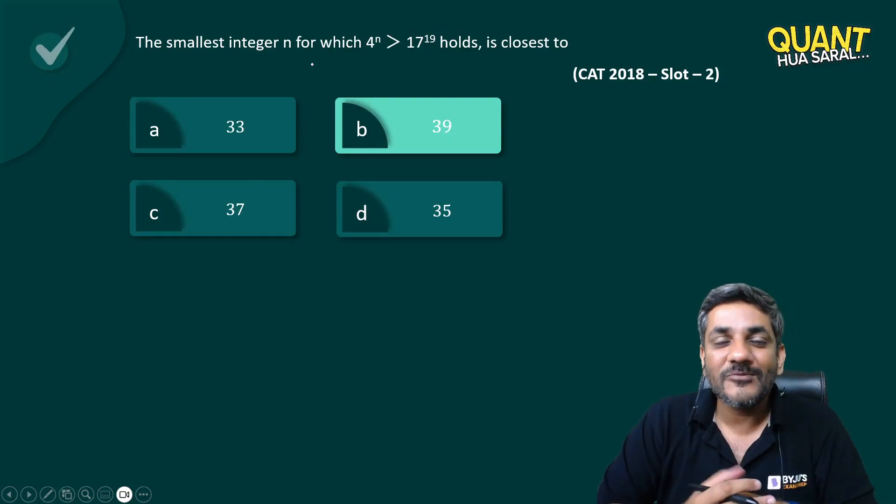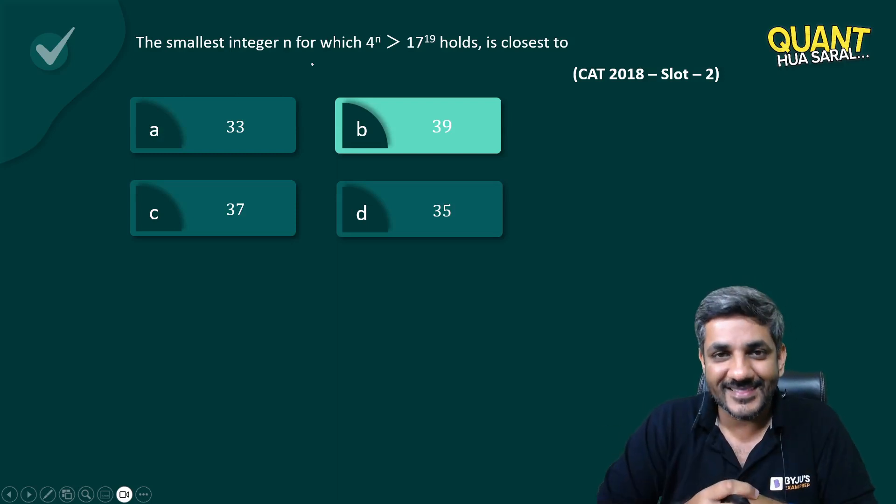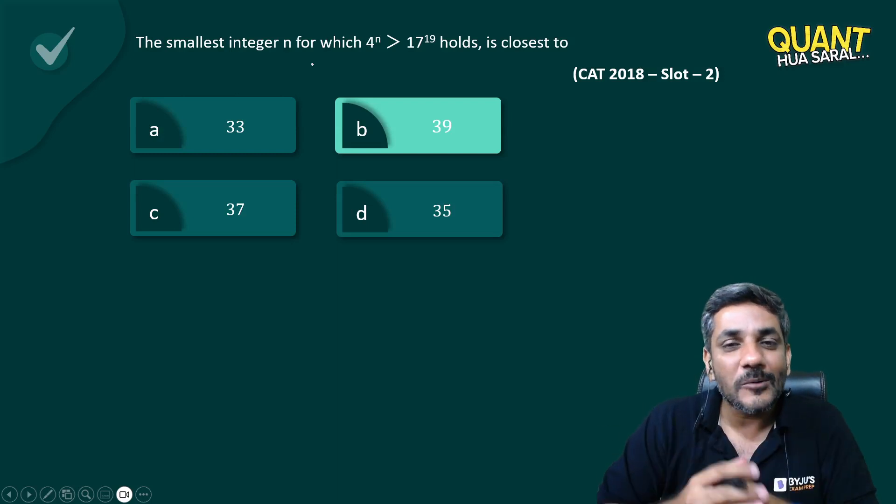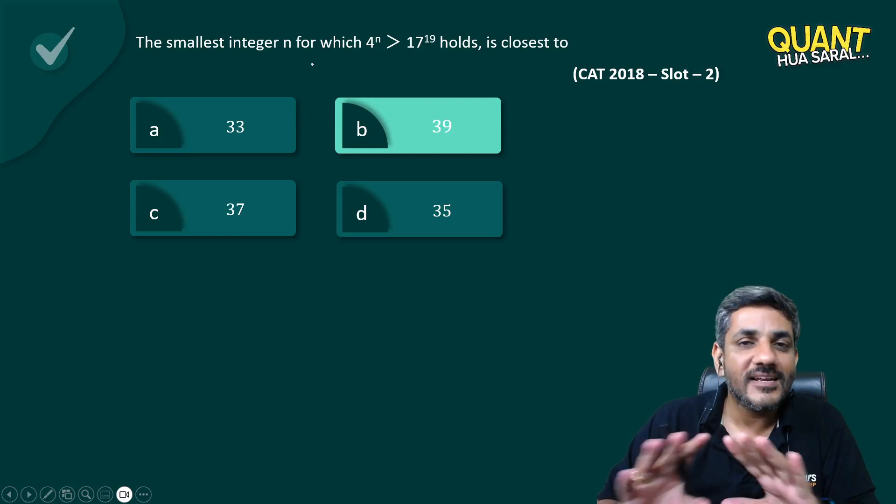But I know some of you would have this question: sir, what if there were two options greater than 38? What if there were three options greater than 38? Let me tell you, then it would not have been a question of CAT.